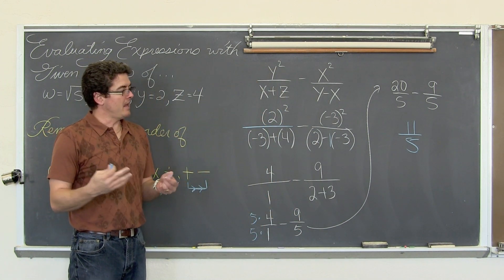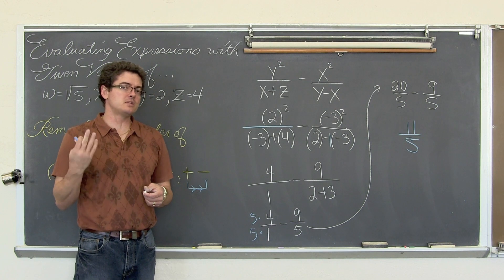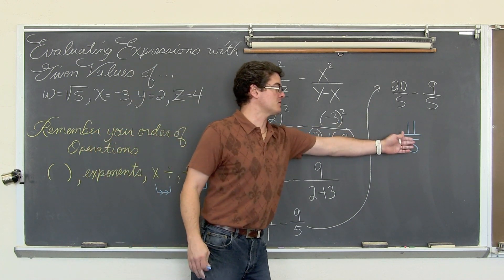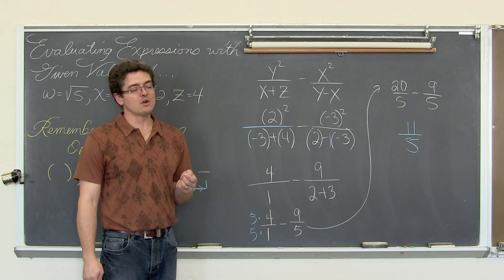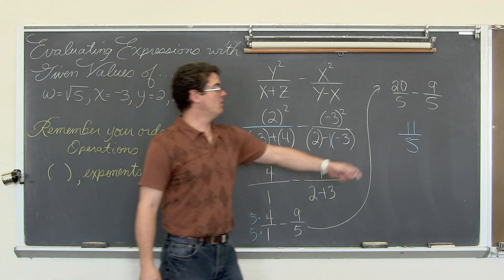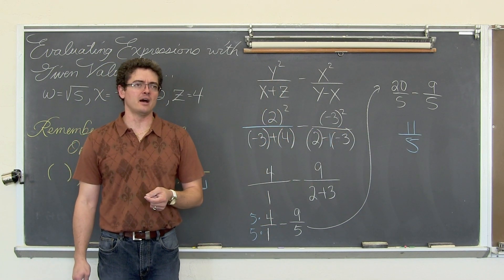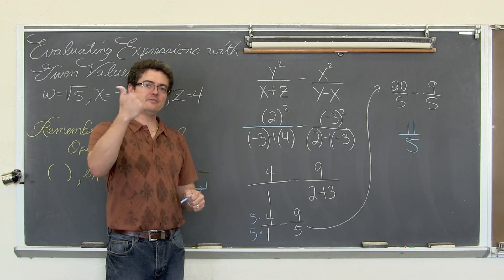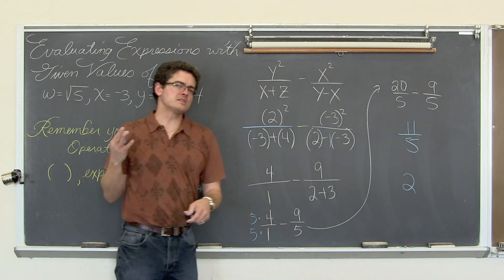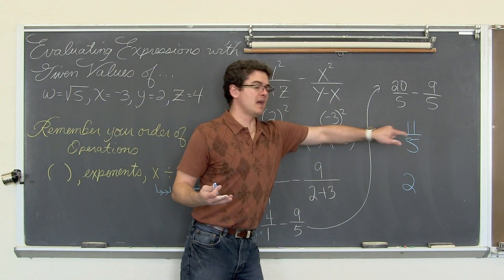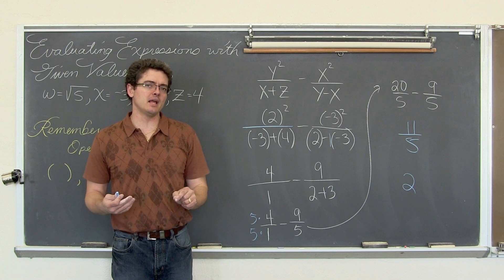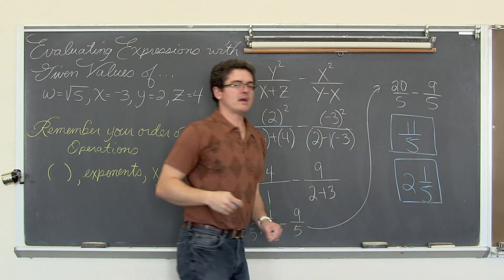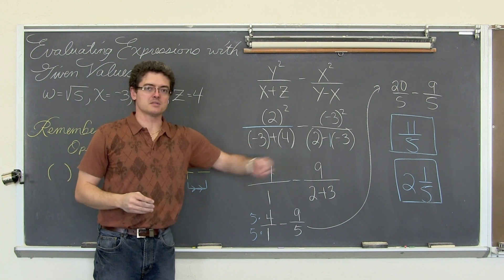That is an improper fraction. If your teacher wants a mixed fraction where the numerator is not larger than the denominator, you need to convert eleven over five. How many fives are in eleven? Two, because five times two is ten. The remainder is eleven minus ten, which is one. So eleven over five as a mixed number is two and one fifth. Use whatever format — improper or mixed — that your teacher requires.